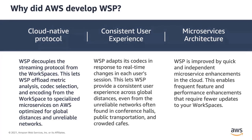At AWS, we architect both in terms of features and patterns, looking for opportunities to improve in both domains. WSP is improved by quick, independent microservice enhancements in the cloud, enabling frequent feature and performance enhancements which require fewer updates to your Amazon Workspaces. As a managed service, Workspaces is designed to reduce the operational burden of end-user computing. In developing the WorkSpaces Streaming Protocol, AWS offers the same turnkey access to end-user computing, extending our proprietary architecture down to the protocol level. This improves our development agility and reaction time, both to customer feedback and any potential security threats.